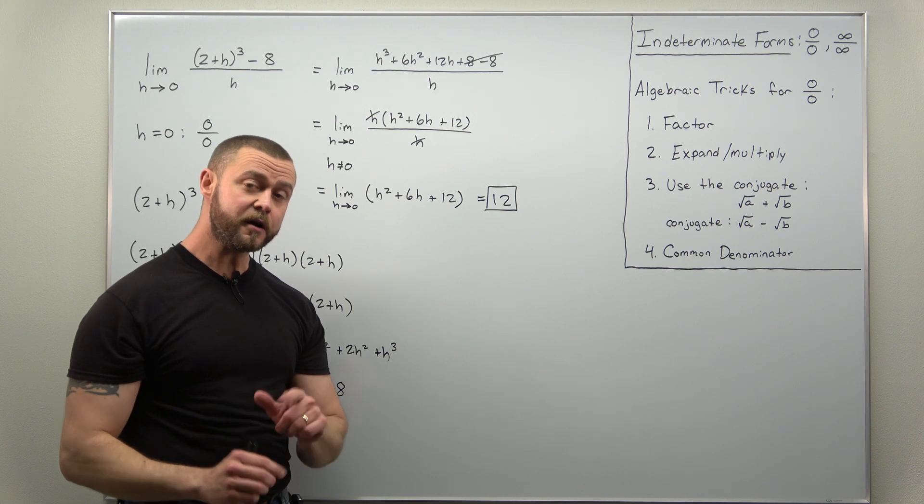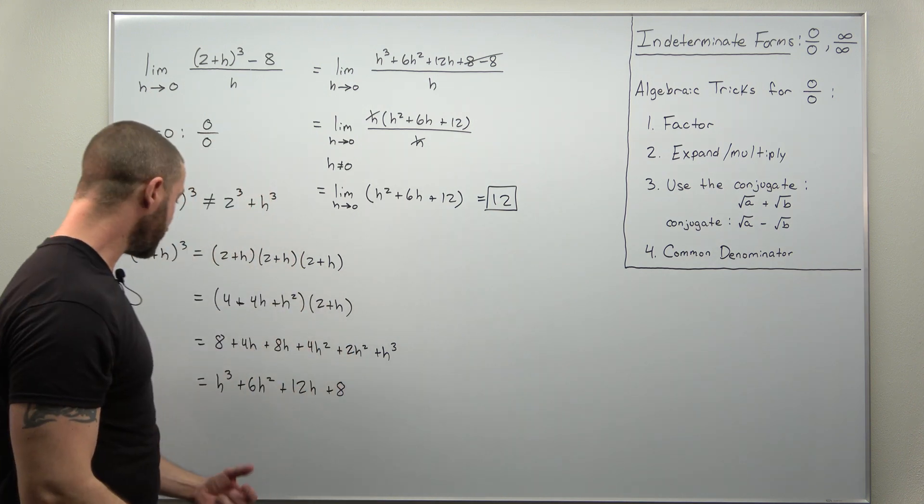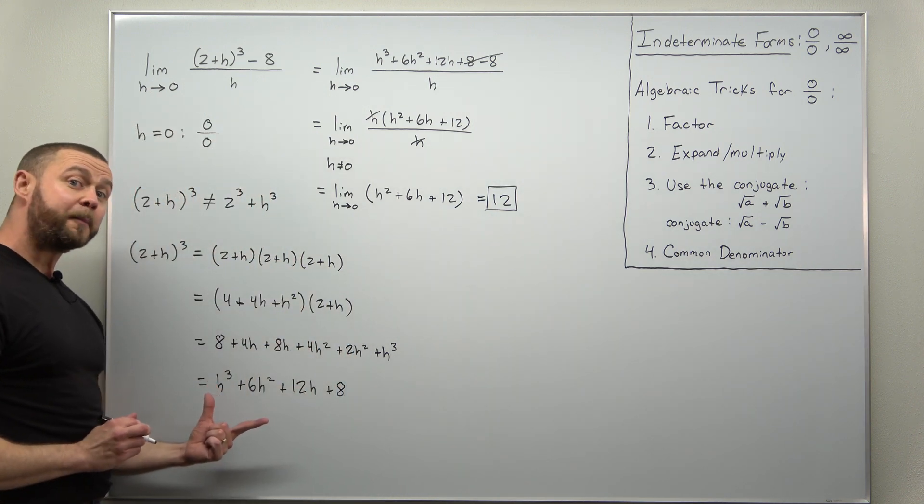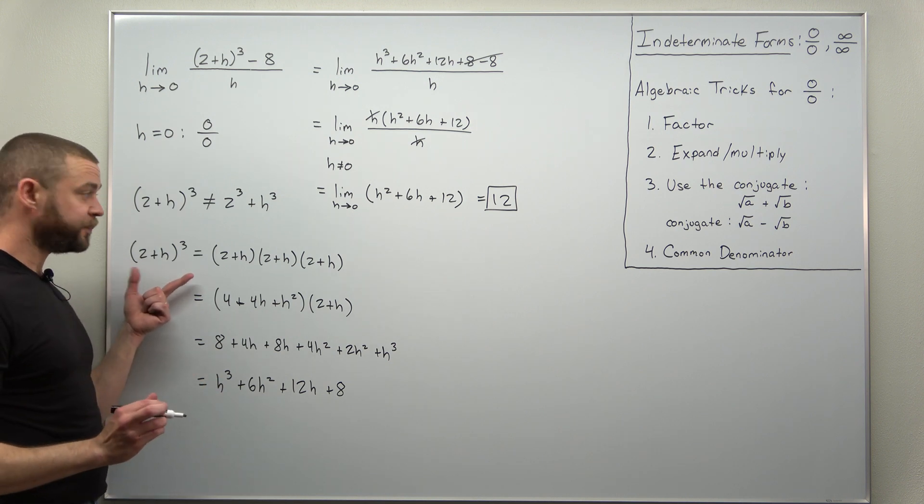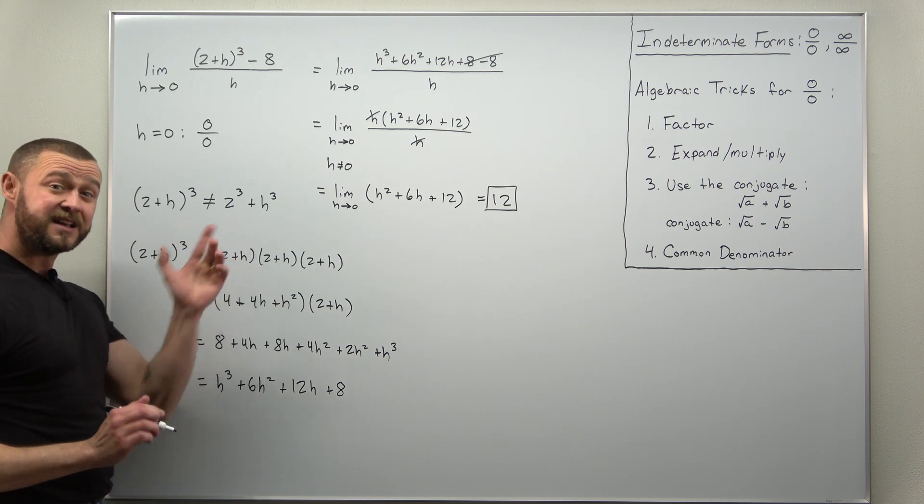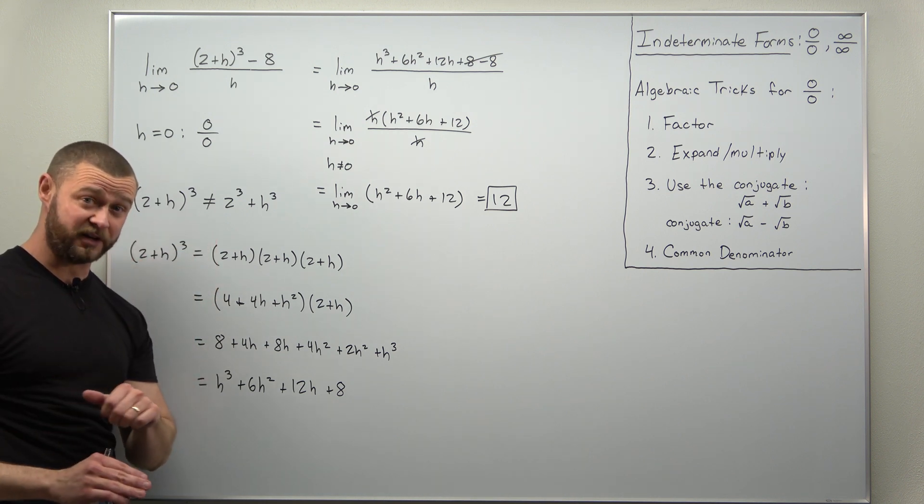And that is your limit here. And again, all the work was properly multiplying or expanding (2 + h)³. If you make this mistake, it's like minus a thousand points.